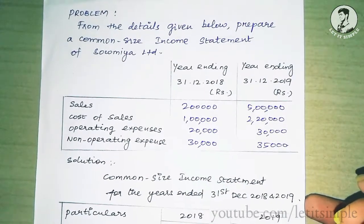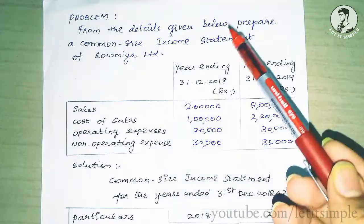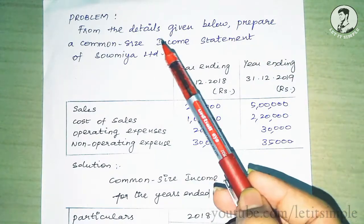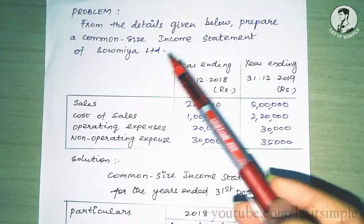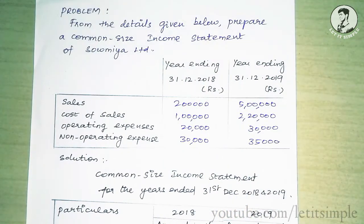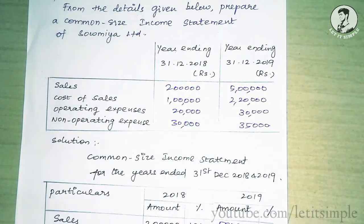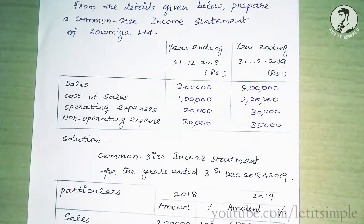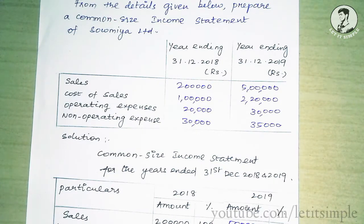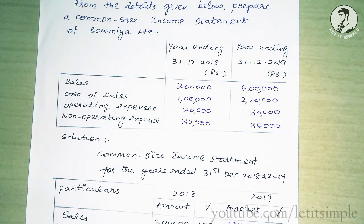How do you prepare the common-size income statement of Saumia Unlimited? Saumia Unlimited has an income statement for two years. How do we prepare the common-size income statement? The question involves sales, cost of sales, operating expenses, and non-operating expenses. It is very simple.